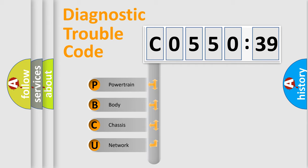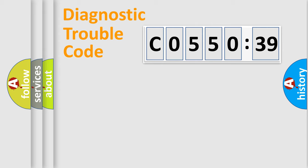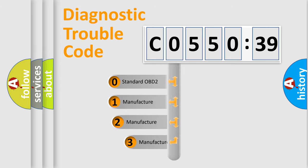We divide the electric system of automobile into four basic units: Powertrain, Body, Chassis, and Network. This distribution is defined in the first character code.